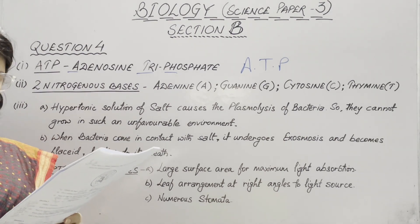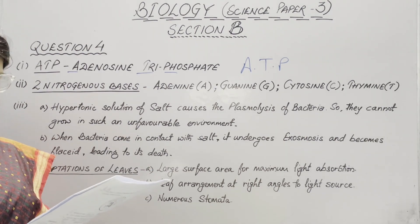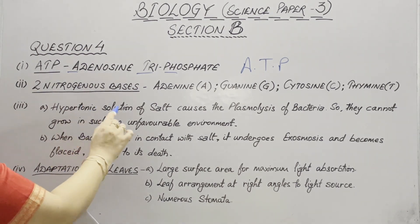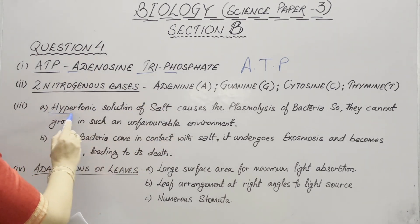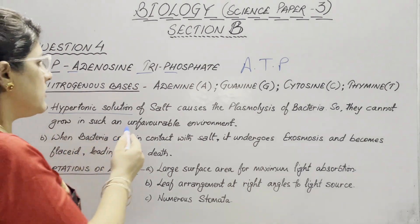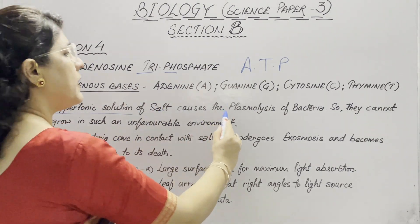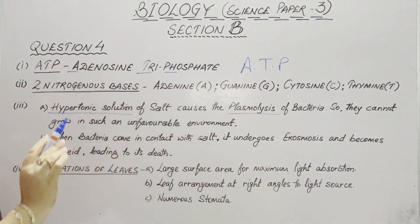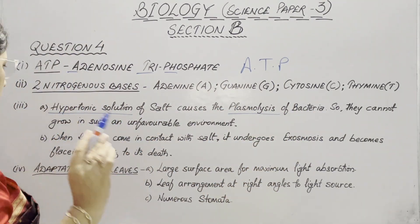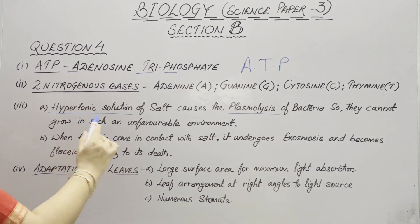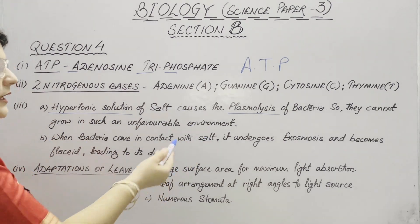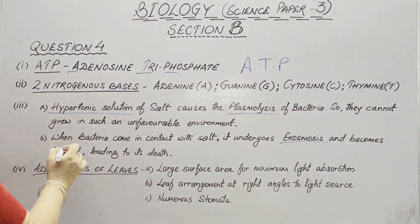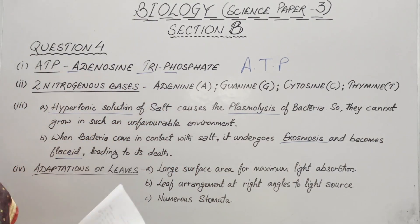Addition of salt to pickles prevents the growth of bacteria — explain by giving two suitable reasons. First, hypertonic solution of salt causes plasmolysis of bacteria, so they cannot grow in such an unfavorable environment. Second, when bacteria come in contact with salt, they undergo exosmosis and become flaccid, leading to their death.